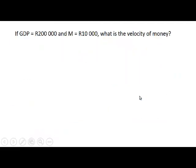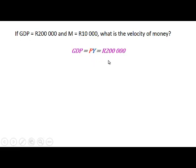So if the GDP is 200,000 and the money supply is 10,000, how can we calculate the velocity of money? We know that GDP equals PY and it equals 200,000. We know that M, the money supply, is equal to 10,000. We want to calculate velocity, so we can use the equation of exchange.